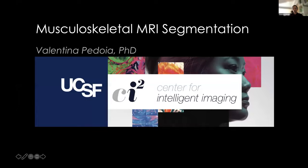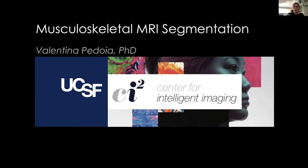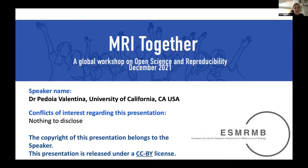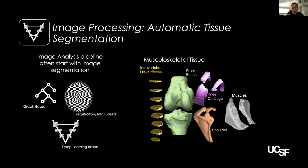Thank you for the introduction, and thank you for the invitation to talk today. I was asked to talk about musculoskeletal MRI segmentation, and I have nothing to disclose related to this specific context. The image processing pipeline in musculoskeletal MRI often includes a segmentation step — often one of the first steps you do when extracting musculoskeletal biomarkers from MRI images. There are several techniques.